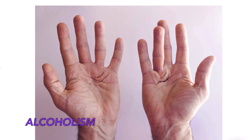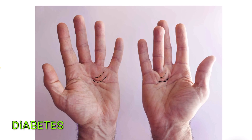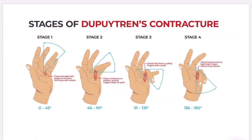Alcohol intake and diabetes are also associated with an increased risk of Dupuytren's contracture. These are the different stages of the disease — as you can see in the images, with increasing severity, there is increasing flexion of the ring and little finger towards the palmar surface, and they become more rigid.